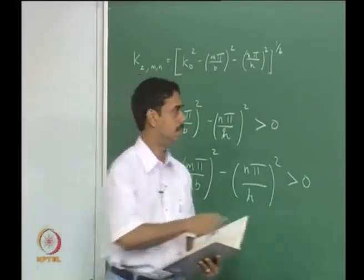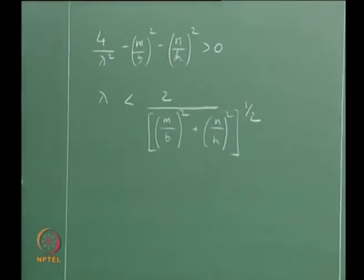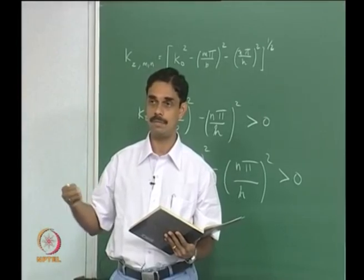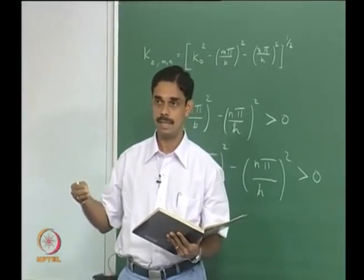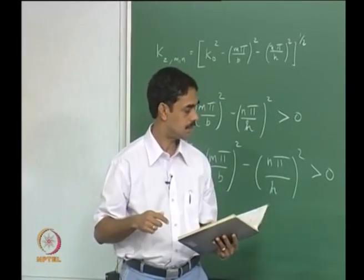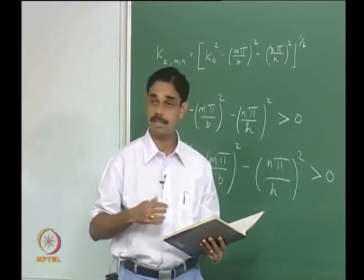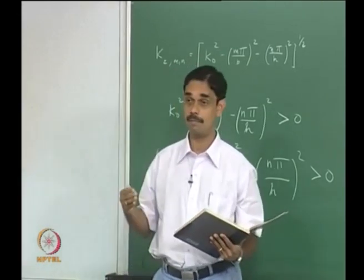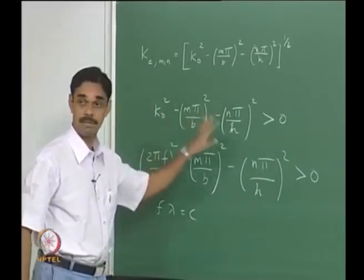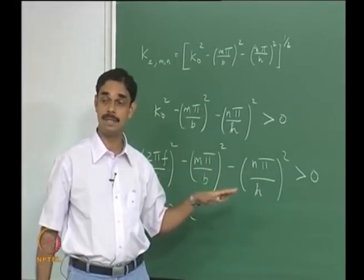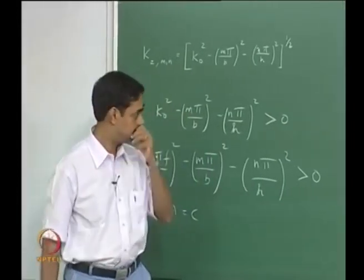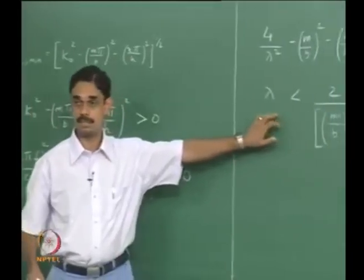If the wavelength is small, or the frequency is higher than the cutoff value, you can establish the wave in the duct; otherwise it will not propagate and will only be present locally. Plane waves have no problem because if m and n are both zero, the inequality is always satisfied. But for non-plane waves with mode numbers m and n, this condition must be satisfied.